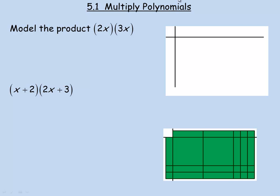In this lesson we'll take a look at multiplying polynomials. In the examples on this page I'm going to model multiplying polynomials by using algebra tiles, and that's what these green rectangles and squares represent. First of all we're going to model multiplying 2x by 3x.